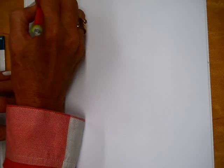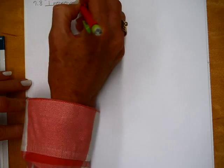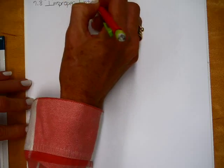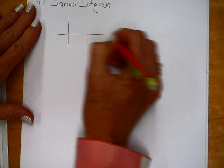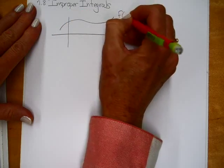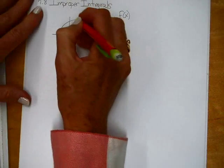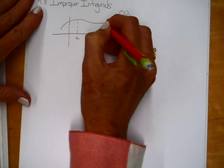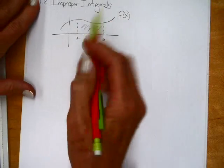Section 7.8 is something called improper integrals. You may or may not remember that when you first learned about integration, you had to have a function that was continuous over the region. So when you had your function f of x, it had to be continuous, which meant it didn't have any holes or gaps or anything in it. And when you integrated it from a to b, you looked at it as the area under the curve, and the function was continuous.